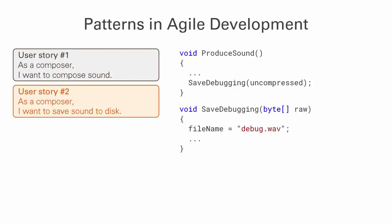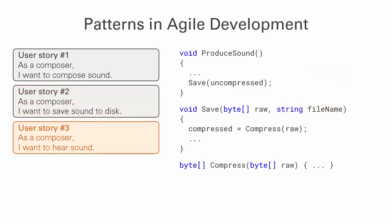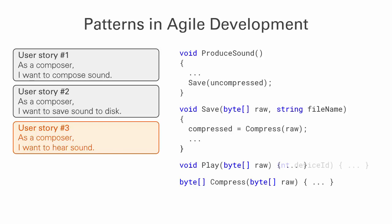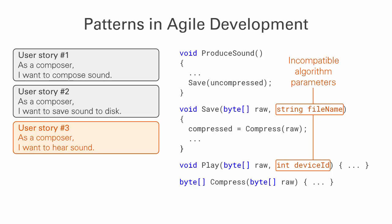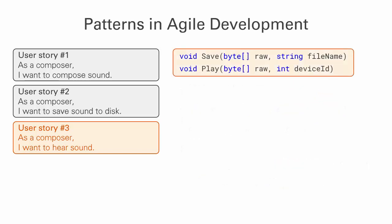Then comes the second user story: saving sound to disk. Pull out the save method if you haven't already. Write a method to compress audio, then save it to a file, with the file name becoming the varying parameter. Then comes the third user story: playing the sound. Audio devices normally work on non-compressed sound — great, we have it. The play will send it to a playback device, though we will need the identity of the device. You see, different implementations have different parameters. And now, at last, we have two incompatible implementations. That gives us a reason to consider applying a design pattern.